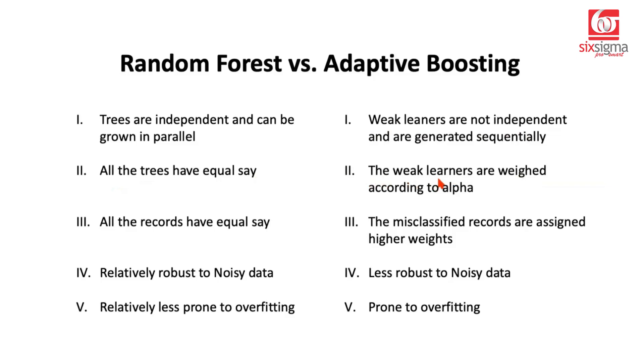Whereas in case of adaptive boosting, the weak learners are weighed according to alpha. The trees have weights which are derived as per alpha. All the records in case of random forest also have an equal say, are weighed equally. But in case of adaptive boosting we've discussed misclassified records are assigned higher weights.